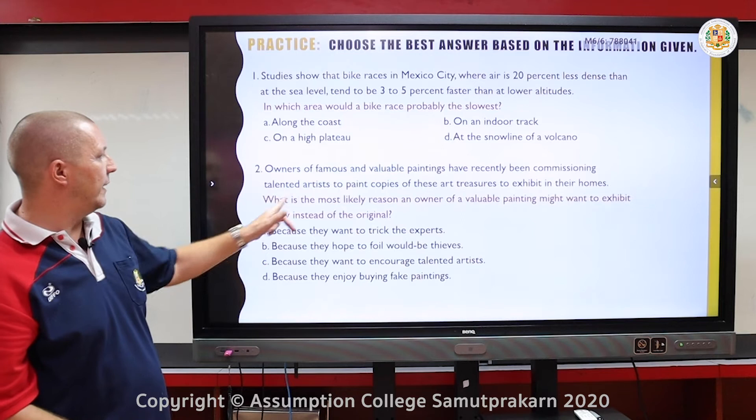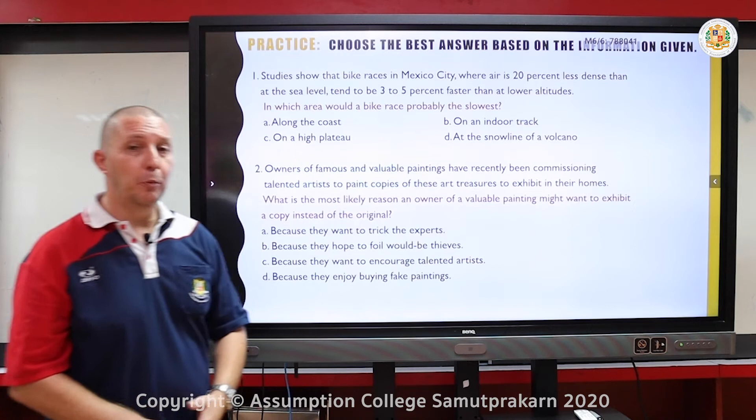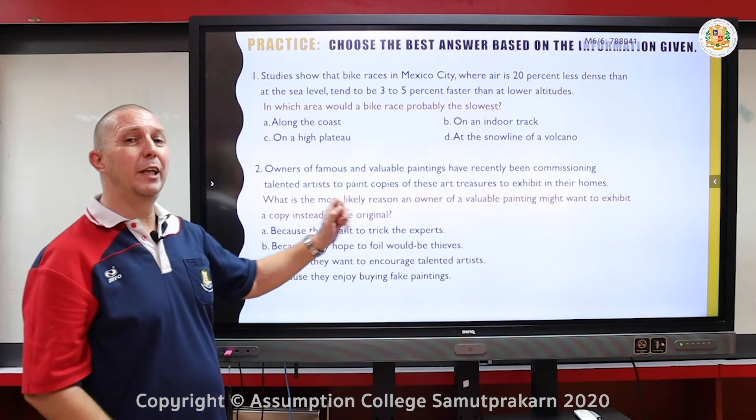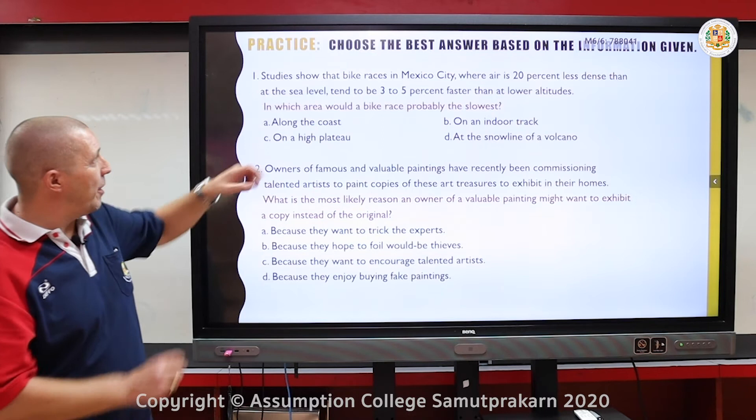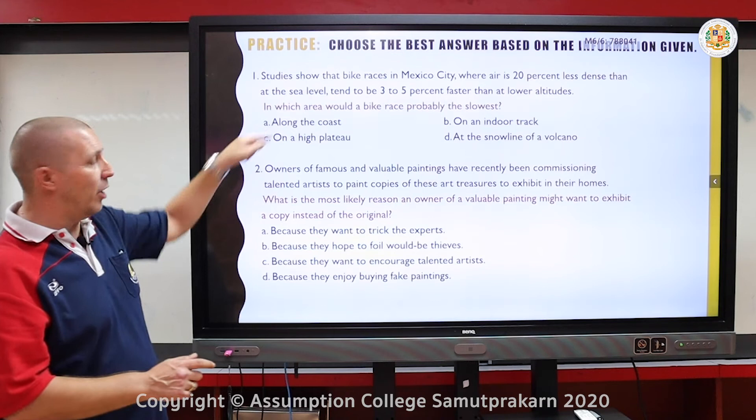Have a look at two — this is asking what is the most likely reason an owner of a valuable painting might want to exhibit a copy instead of the original? So why would someone want to show a copy of the original painting in an exhibition? Have a try and note down your answers. This is just practice, so note down one, two, and your answer for each one.